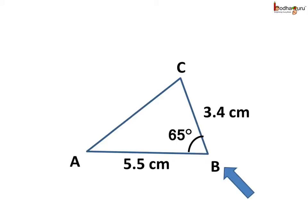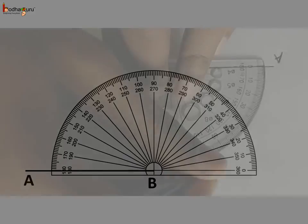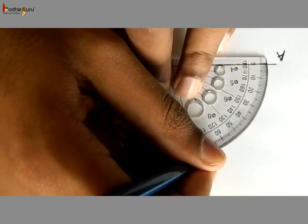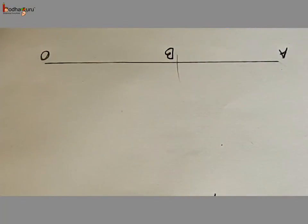Now look at the rough sketch. Side BC is 3.4 cm and the angle at B is 65 degrees. So we draw 65 degrees at point B using the protractor. Place the protractor on line segment AB such that AB coincides with the base line of the protractor, and point B is at the middle mark. We make a point at 65 degrees and draw a 65 degree ray at point B.